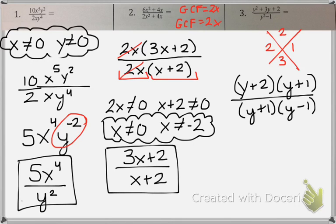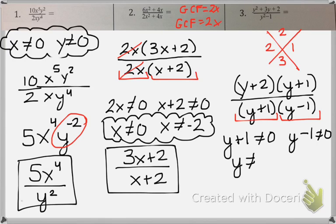Let's really quick look at our restrictions. We say that this factor cannot equal 0 and this factor cannot equal 0. So I get that y can never equal negative 1 and y can never equal positive 1. Those are my restrictions.